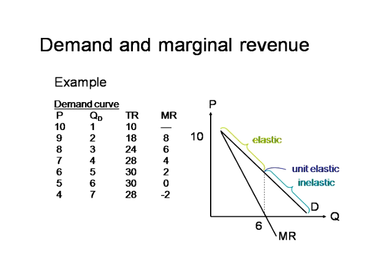Even the simplest demand curve — a straight line with slope of one — has multiple regions: elastic to the left of Q equals six, inelastic to the right, and unit elasticity at the crossover point right in the middle. A student asks whether this model applies to production pricing or retail pricing. The distinction isn't relevant here — we're saying that consumer demands are such that if I want to sell five units I cannot charge more than $6 per unit. We haven't said anything about the entrepreneur's cost of production; we're only talking about the revenue side.